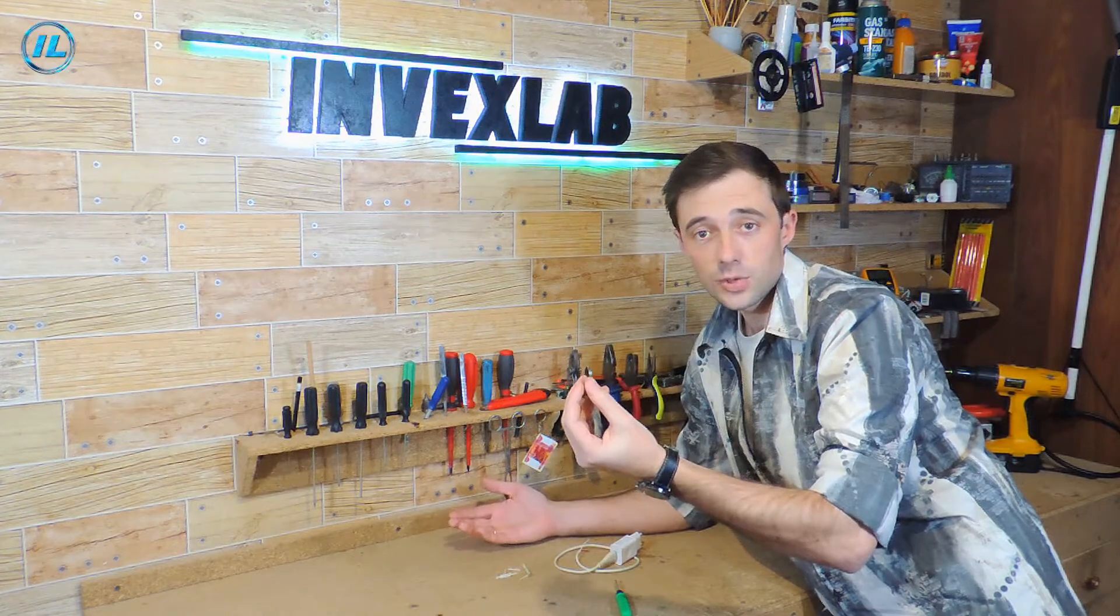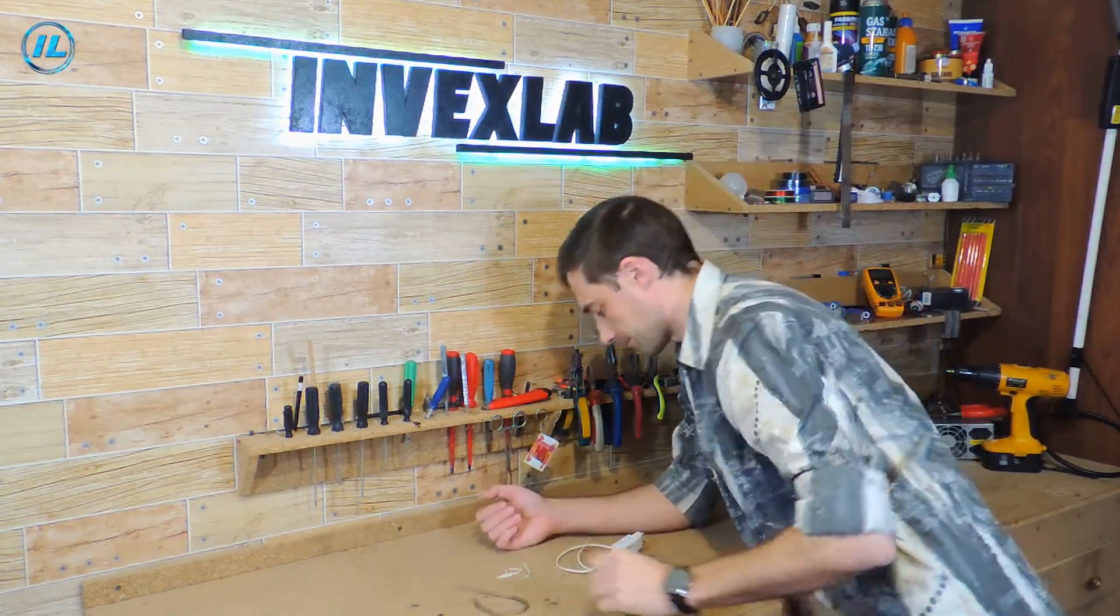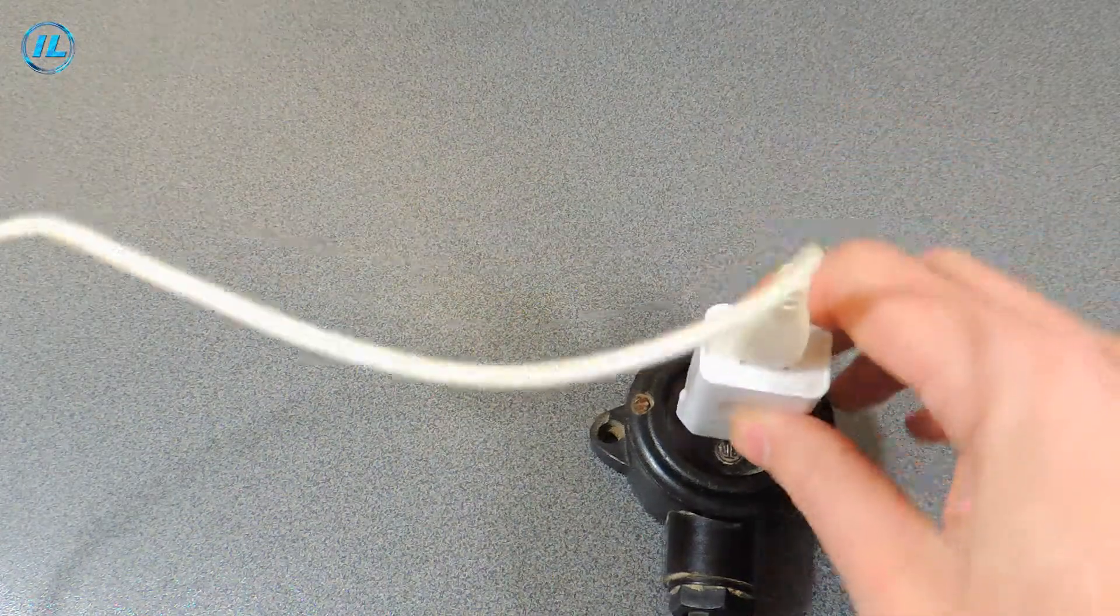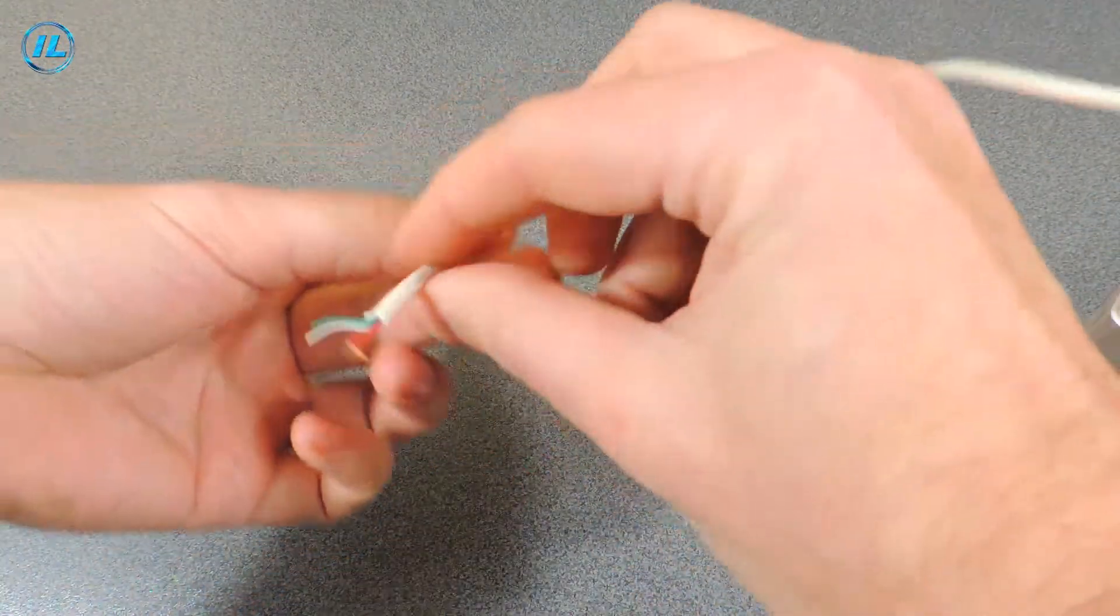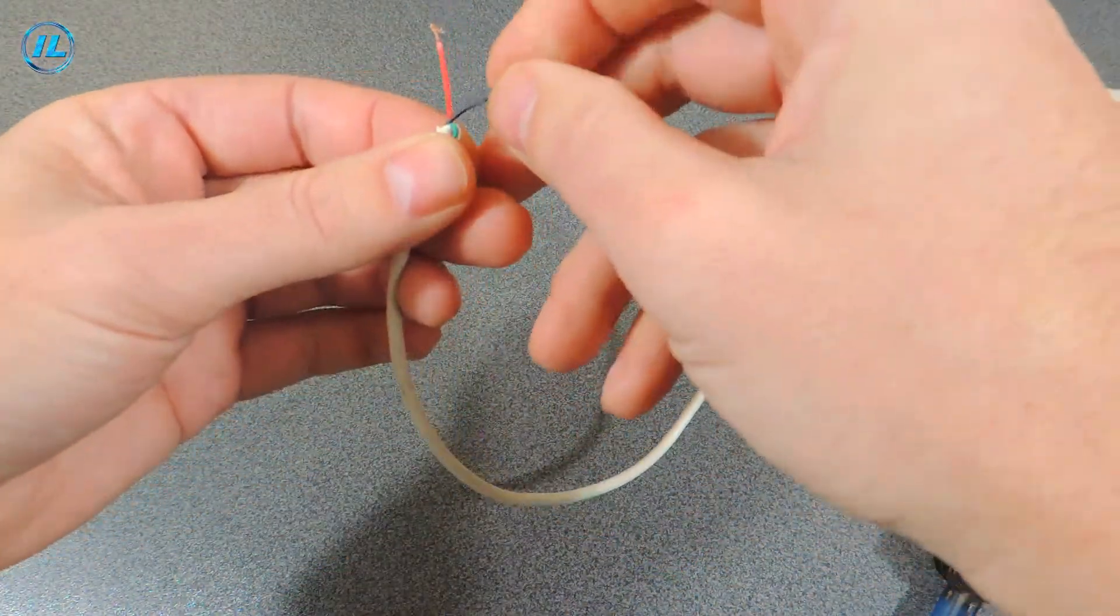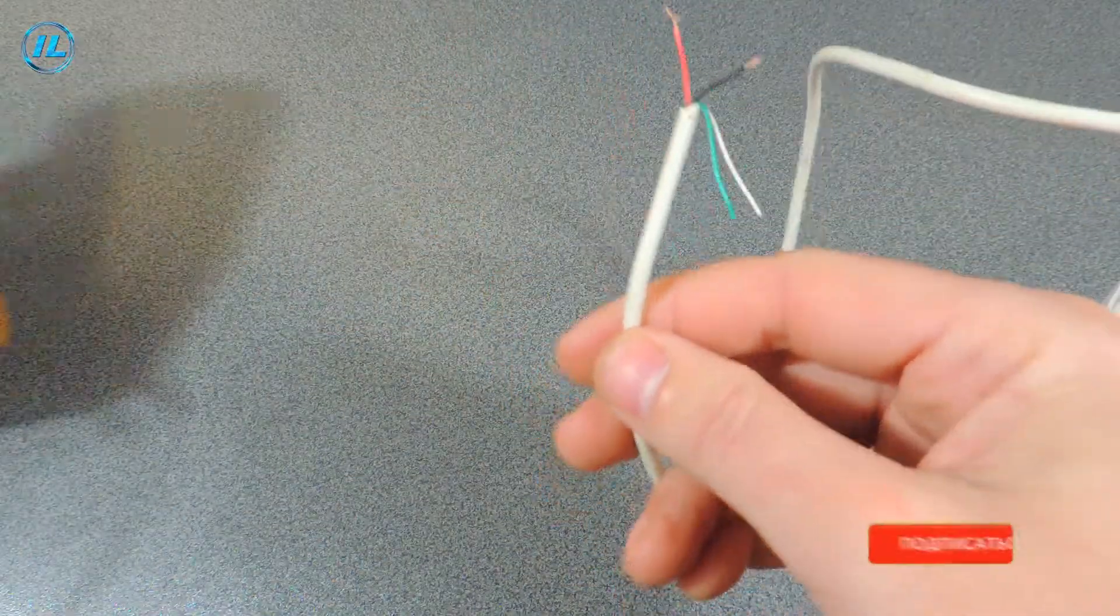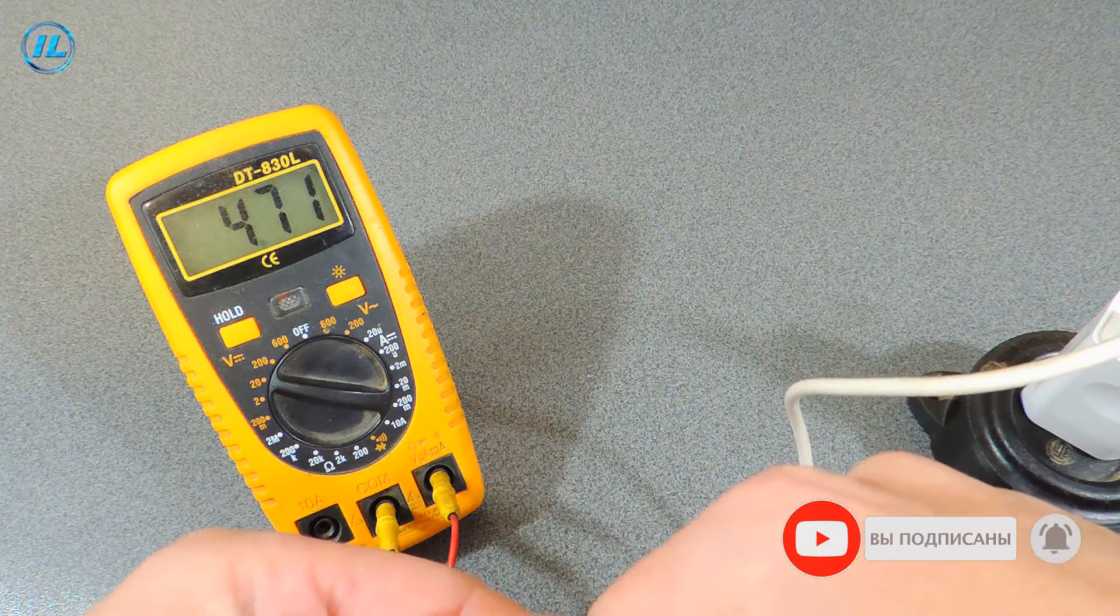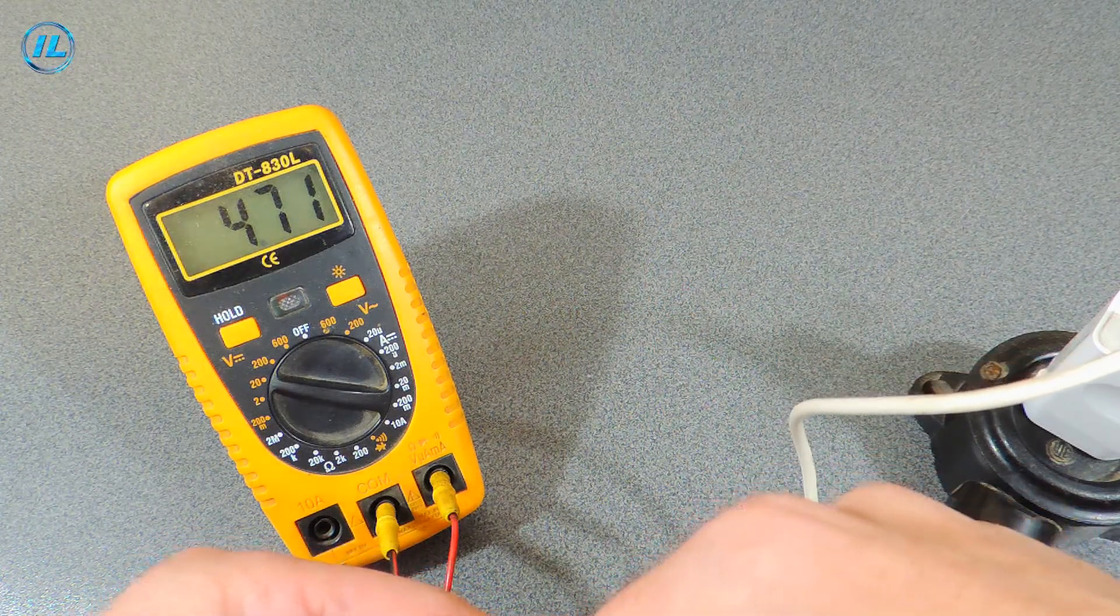First of all, you need to measure out a suitable piece of nichrome wire. This is very easy to do. Turn on the charger and the network. We will need two wires, black and red. This is nutrition. Almost 5 volts. 4.7 volts.